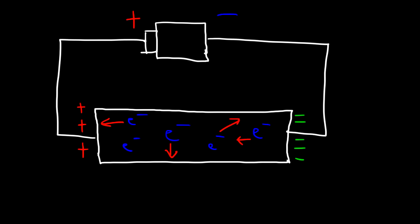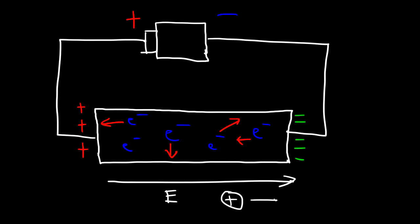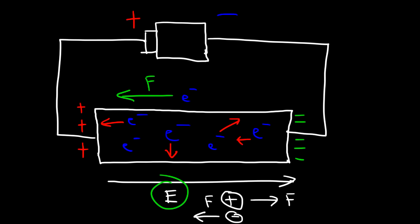The electric field extends from the positive side and points towards the negative side. It's important to understand that a positive charge feels a force that accelerates it in the direction of the electric field, while a negative charge feels a force that accelerates it opposite to the direction of the electric field. So the electrons will feel a force accelerating them towards the left, because the electric field is directed towards the right. The electrons are attracted to the positive terminal and repelled by the negative terminal.